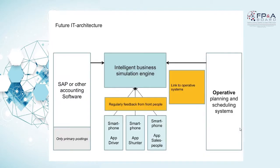Looking at the IT architecture: on the left side you just have a financial accounting system. On the right side you have your operating systems for planning and scheduling of resources. And in the middle you have an intelligent business simulation engine that integrates these two sides — on one side the financial measurement of changes in earnings and costs, on the other side direct input into business decisions. That's the goal. And we already have SAP prototypes working for our logistics network.